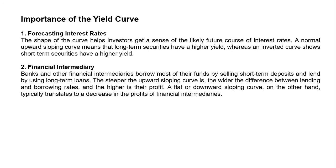The second importance is financial intermediaries. Banks and other financial intermediaries borrow most of their funds by selling short-term deposits and lend using long-term loans. The steeper the upward-sloping curve, the wider the difference between lending and borrowing rates and the higher their profit. A flat or downward-sloping curve, on the other hand, typically translates to a decrease in the profit of financial intermediaries.